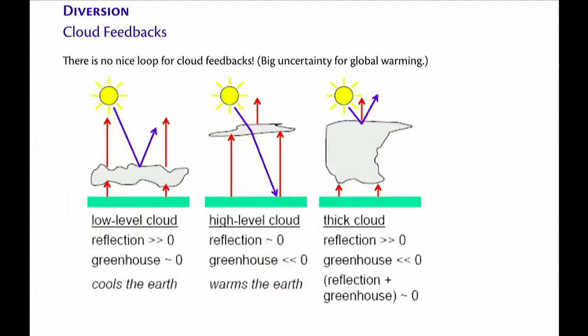Cloud feedback is a bit of a diversion. One of the problems of climate science is that there is no nice loop for clouds. If it warms, do you get more clouds or less clouds? It depends on the type of cloud. Low-level clouds tend to have a high albedo but not much of a greenhouse effect, so they would cool the Earth. High clouds might do the opposite — not a particularly big albedo effect, but they do have a greenhouse effect, so they might warm the Earth.